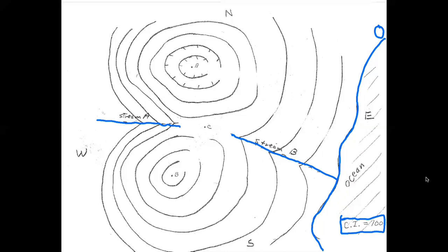Going up by hundreds, there's a little gap right there — probably somebody erased it at some point. That's a good place to write your value: 100 feet. They go up by hundreds, so this would be 200, this would be 300. Going over towards point B, the next one up is 400, then 500 right there, and this little one here is 600.